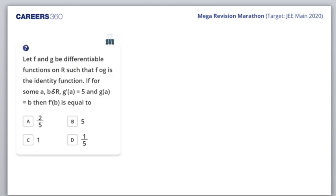Next question: Let f and g be differentiable functions such that fog is an identity function. Identity function is y = x. For some a, b belonging to ℝ, g'(a) = 5 and g(a) = b. Then f'(b) equals? Differentiable function means the left-hand derivative and right-hand derivative exist and are equal.